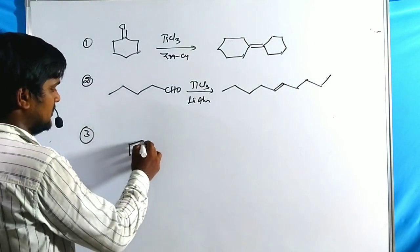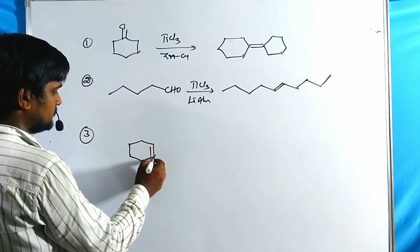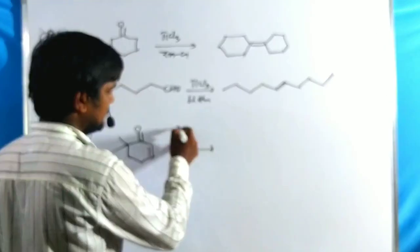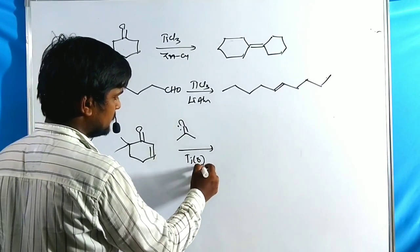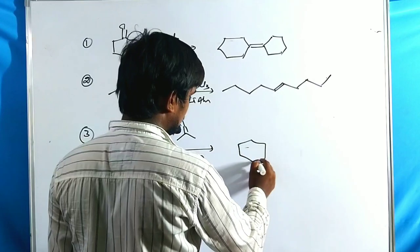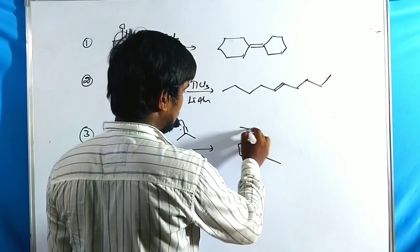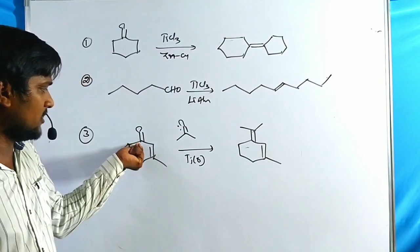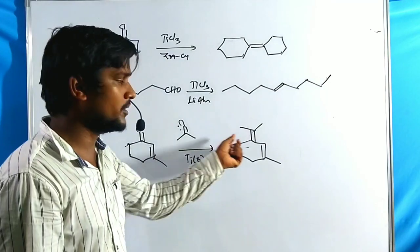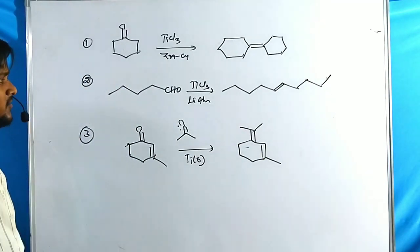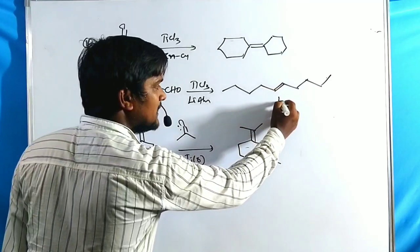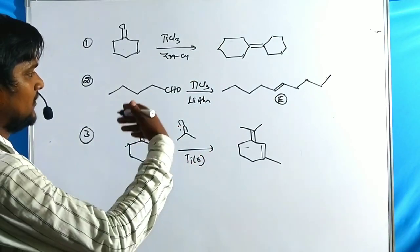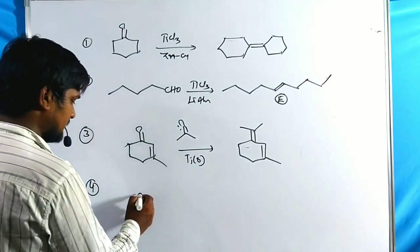Another example: a carbonyl compound treated with acetone in the presence of titanium zero catalyst gives a product with a central double bond flanked by two acetyl groups. Even alpha-beta unsaturated carbonyl compounds can give olefins. For a CHO-containing compound, the E isomer is the major product — this is a stereoselective reaction.